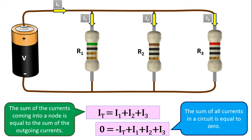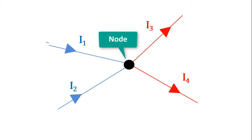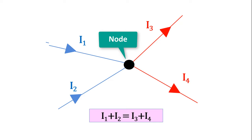Now let's try to understand this formula better through some examples. Here are the incoming and outgoing currents to the node. We know that incoming currents are equal to outgoing currents. The incoming currents to this node are I1 and I2, and the outgoing currents are I3 and I4. Then it will be I1 plus I2 equals I3 plus I4. Rearranging: 0 equals negative I1 minus I2 plus I3 plus I4. That is, the sum of all currents is equal to 0.